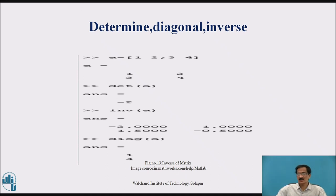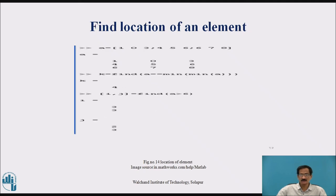This is determinant, then inverse and diagonal commands. Find the location of an element. This will find the location of the elements in a 3 by 3 matrix.